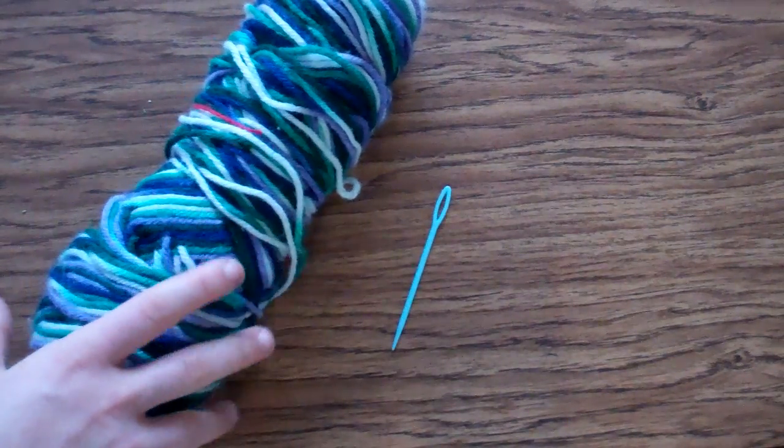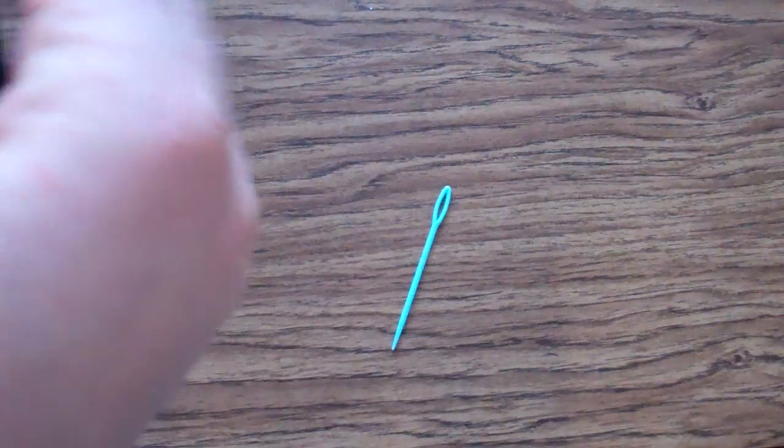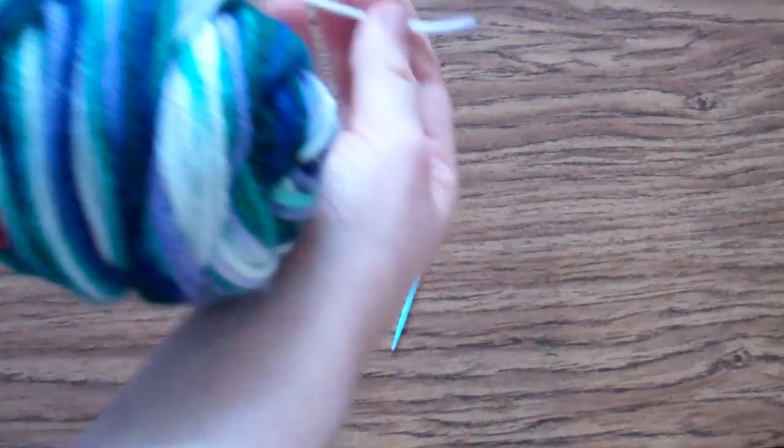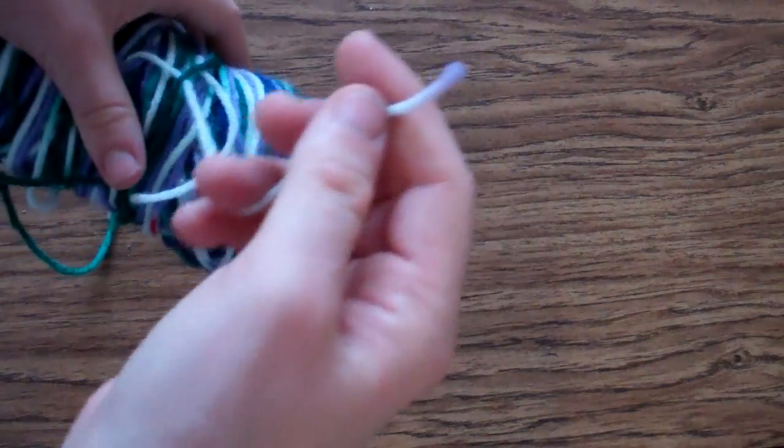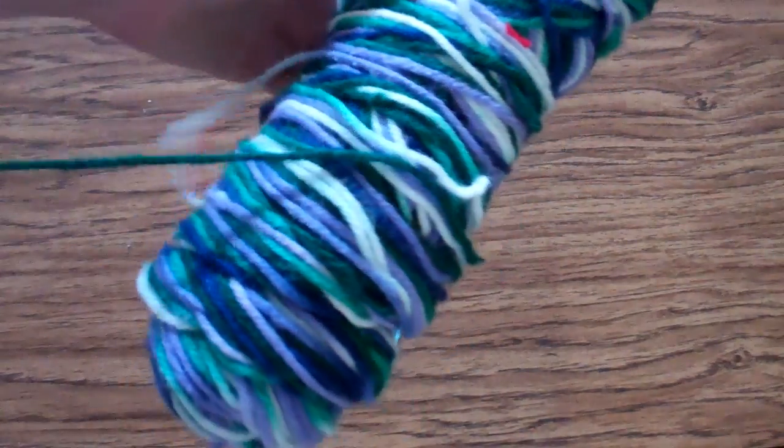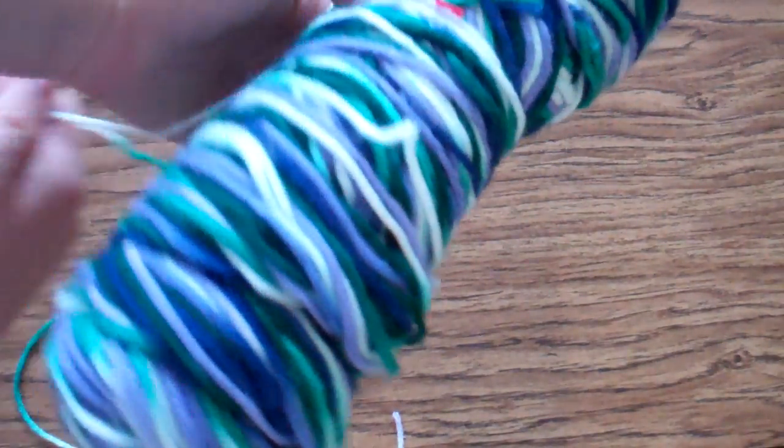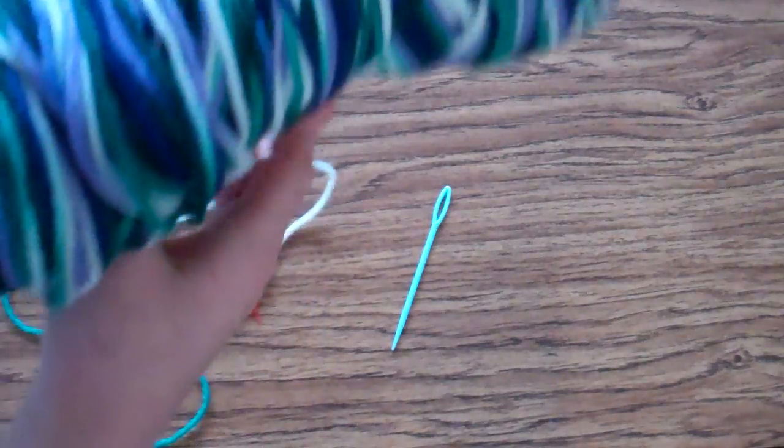You need to pick your first color of yarn that you're going to start weaving with and find the end. Make sure when you're taking yarn off of these little yarn rolls that you aren't pulling on it, but you're carefully, gently unwrapping the yarn from the yarn ball.